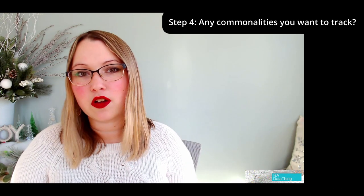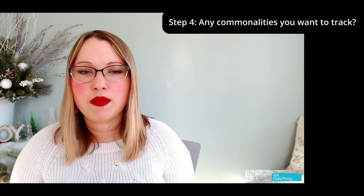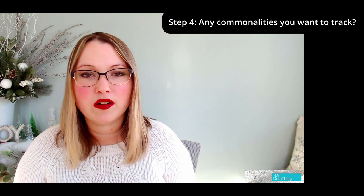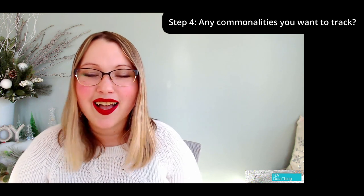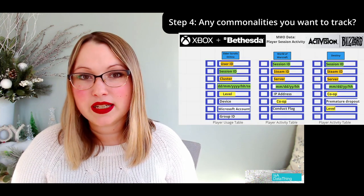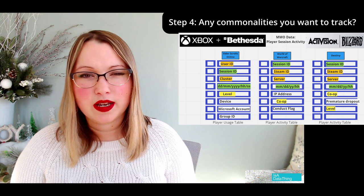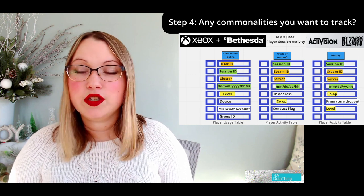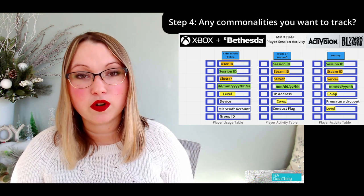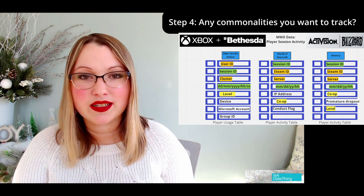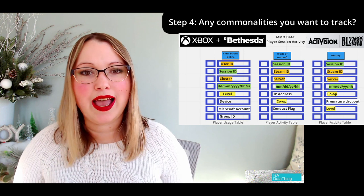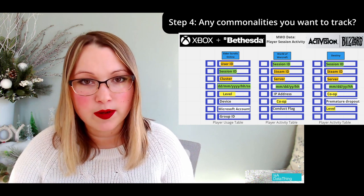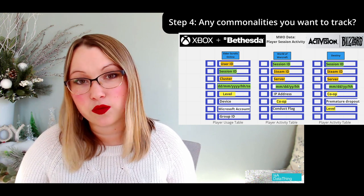The next step is looking at what I call the commonalities — things outside the main MVP use case that show up in at least two of the data sources. In this case, 'level' shows up in some of the databases, but it's not critical to the main MVP. A word of caution: you don't necessarily have to do this step, but it's a good framework to continue adding evidence for when to promote a node to MVP status as you add more acquisitions.